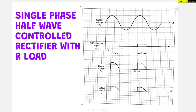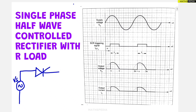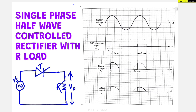The switch we are going to use is a controlled switch, that is the thyristor. Now the basic circuit diagram with R load: one input is given which is the sinusoidal wave, we call it the supply voltage Vs. One controlled switch — a thyristor — is given, and current will be flowing through the resistive load. Vs is equal to Vm sin(ωt). This expression we have to remember.